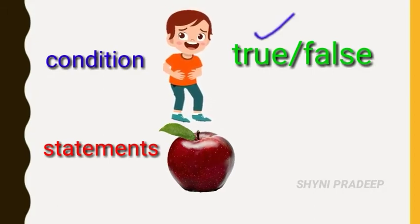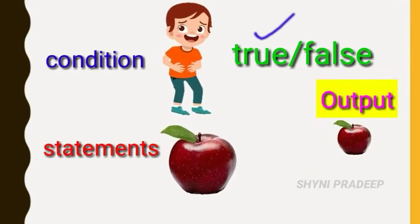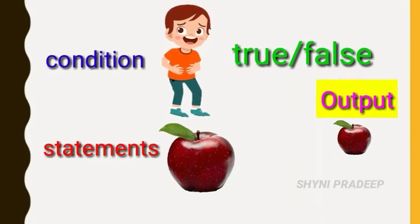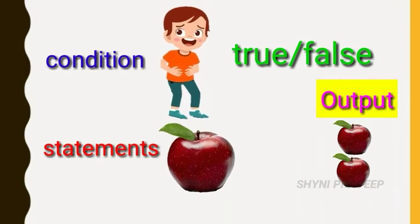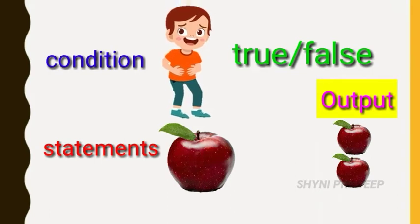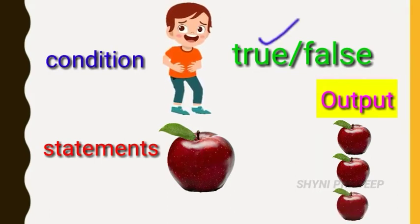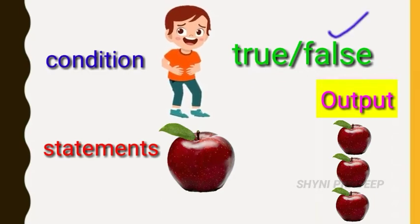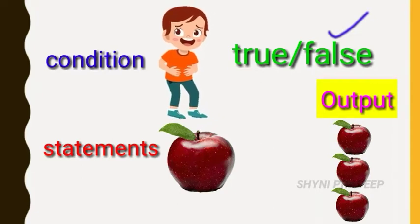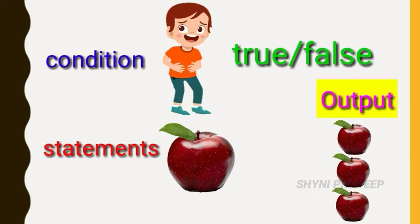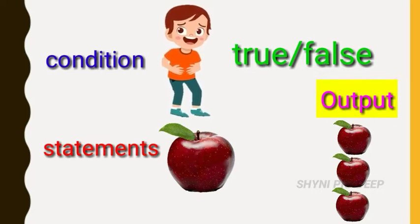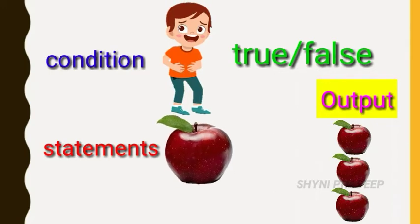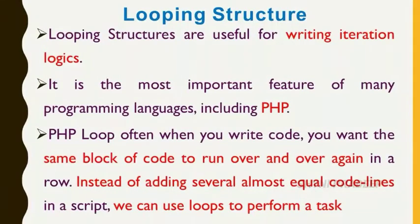Are you feeling hungry now? You are saying yes, which means the condition is true — so eat an apple. Again check the condition; are you feeling hungry? You say yes again, so eat an apple. Now you say no — the condition is false, so you stop execution. The loop is terminated; you have no need to eat more apples because your stomach is full.